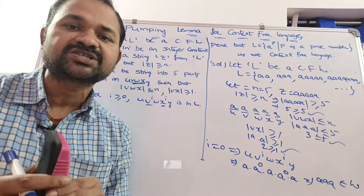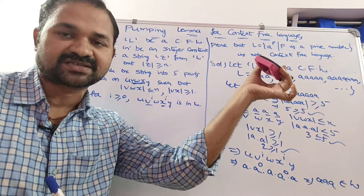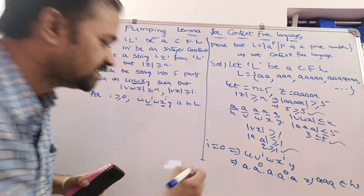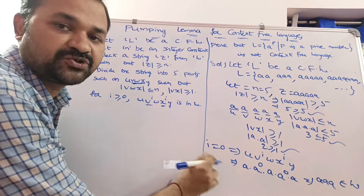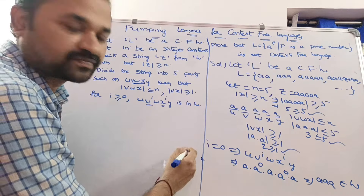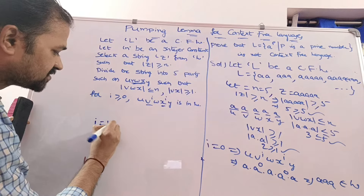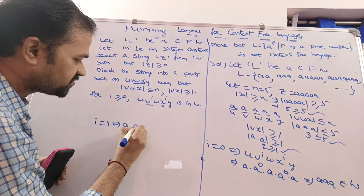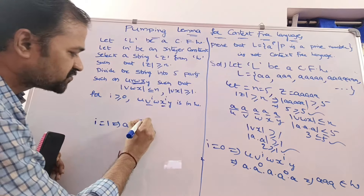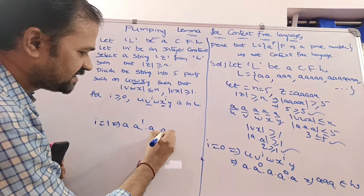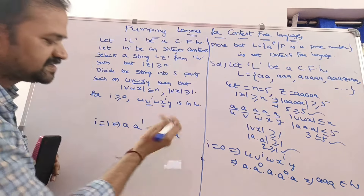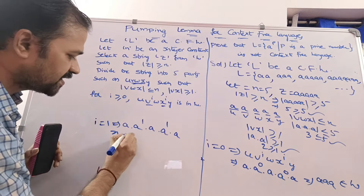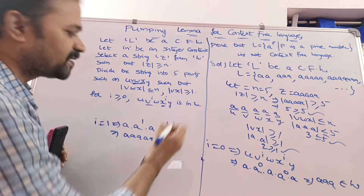We repeat the process until we get a string not in the language. For i = 1: u·v^1·w·x^1·y = a·a·a·a·a = a^5. Since 5 is a prime number, a^5 is also present in the language.